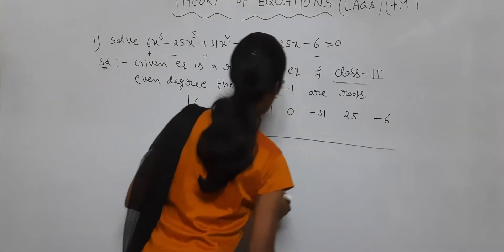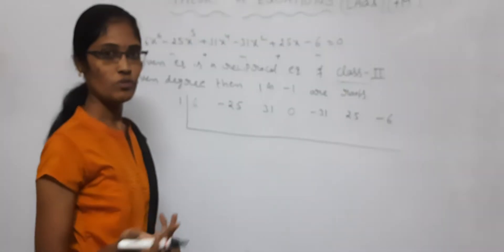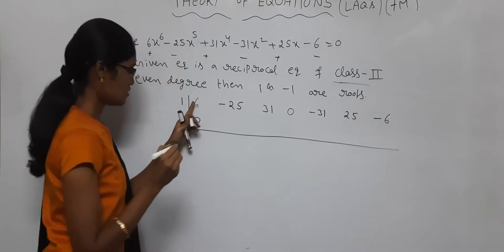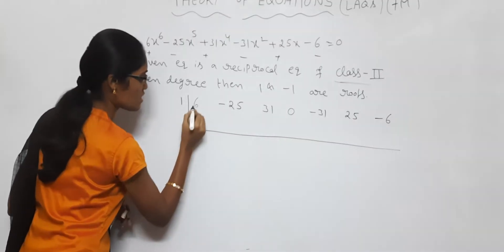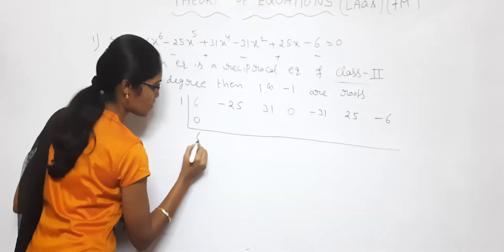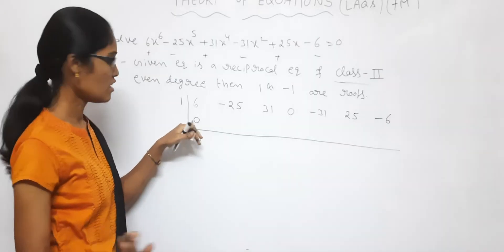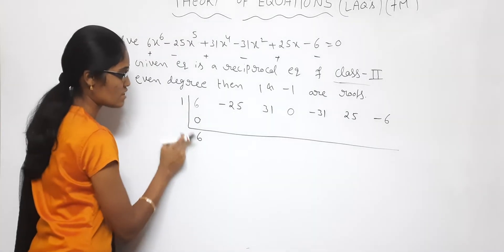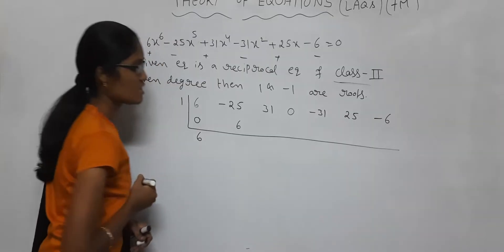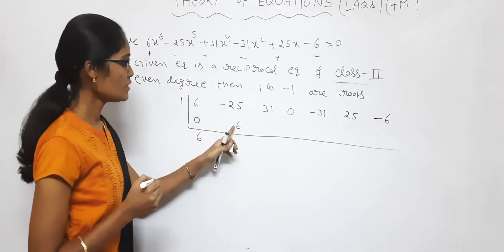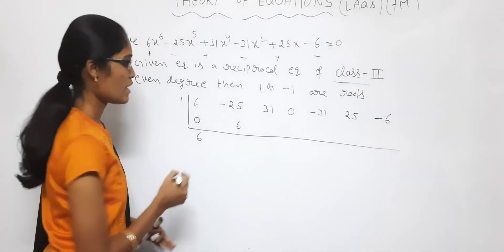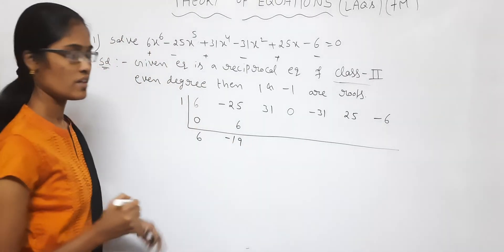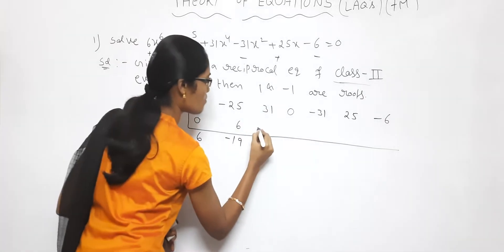First, taking root 1. Put 0. So 6 plus 0 gives 6. Then 6 into 1 is 6. So minus 25 minus 6 gives minus 19. Again minus 19 into 1 is minus 19. Continuing: 6 ones are 6, and the value becomes 0 as expected.